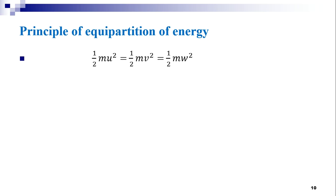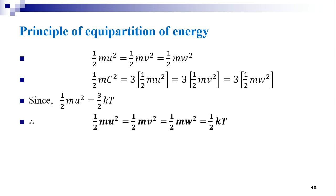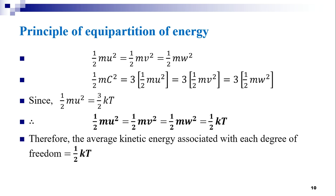Hence, mū² = mv̄² = mw̄². This gives ½mū² = ½mv̄² = ½mw̄² = (1/3) × (3/2)kT = ½kT. Since ½mc² = (3/2)kT, we get ½mū² = ½mv̄² = ½mw̄² = ½kT. Therefore, the average kinetic energy associated with each degree of freedom is equal to ½kT.